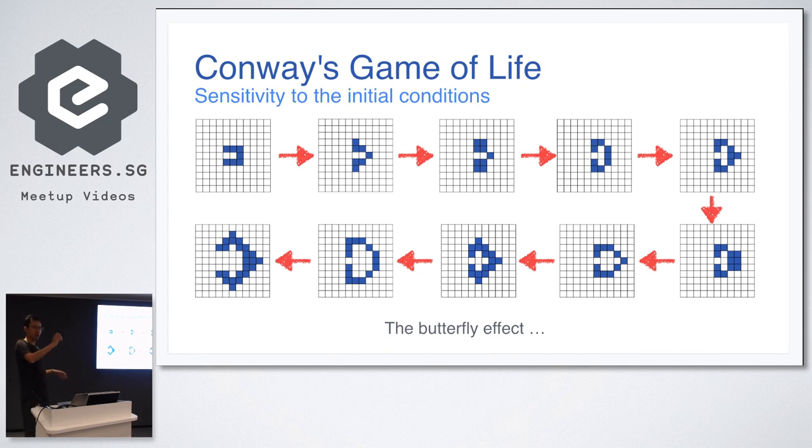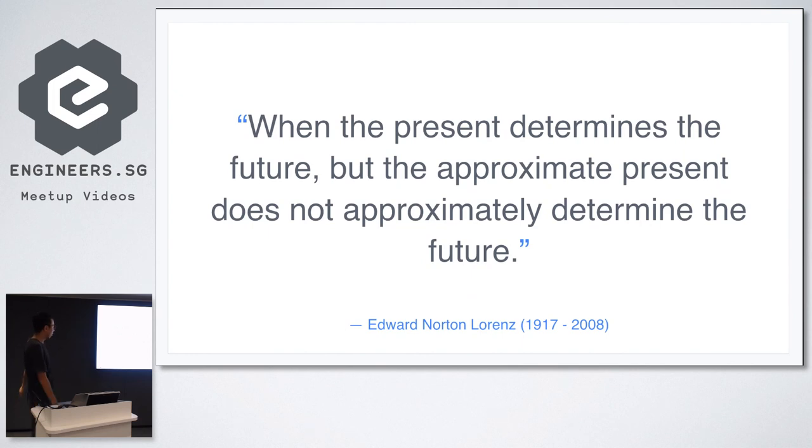Remember that 0.001 example. The first few days is fine, but if you project much longer, then it actually looks very different. So the butterfly effect was coined by this scientist called Edward Lorenz. Lorenz was a pioneer in this field. So he once said, when the present determines the future, the approximate present does not approximately determine the future. With that, I end my talk.